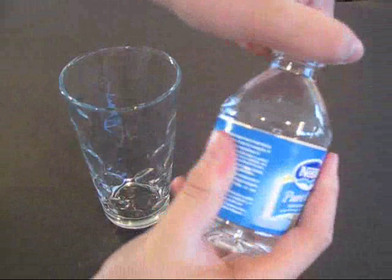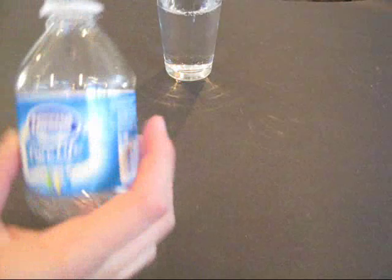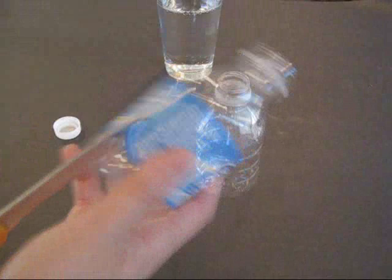The first step is, if you have not already, empty the bottle of water. And I'm just going to empty it into a glass so that when I use the water later, I don't have to waste some more. Set that aside. And next, we're going to remove the label portion.